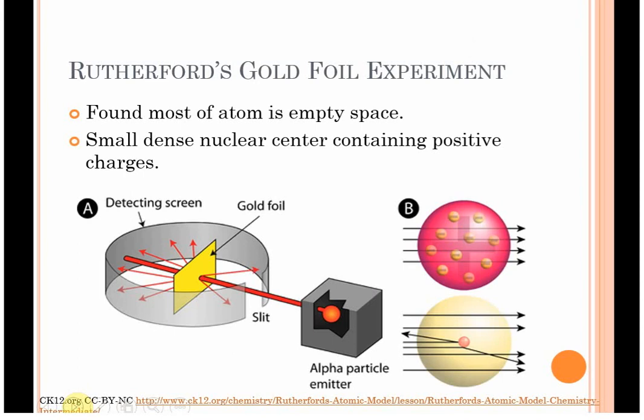Rutherford wanted to go ahead and test this theory. So, what he did is he had gold foil, and he hammered it as thin as he could, and the idea is if you get it basically an atom thick like this, you can shoot much smaller atoms through it.